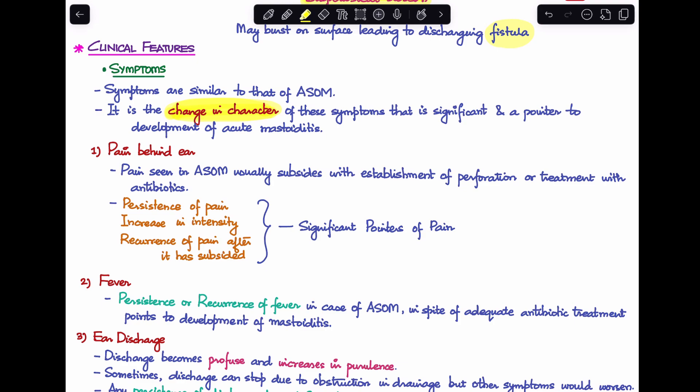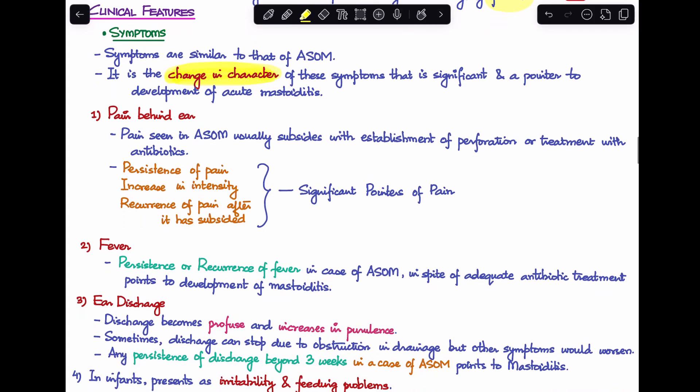First symptom is pain behind the ear. Pain is also seen in acute otitis media but usually subsides with tympanic membrane perforation or proper antibiotic treatment. Whenever we see persistence, increase in intensity, or recurrence of pain after it has subsided, that's a significant pointer in acute mastoiditis.